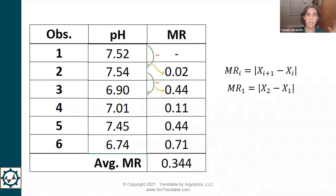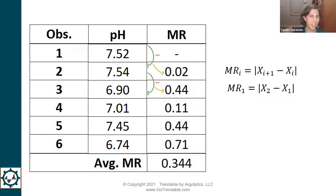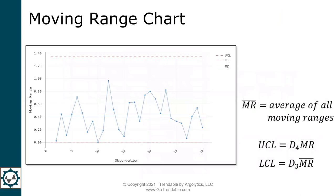For instance, if the first observation plotted on the I-chart was 7.52 and the second was 7.54, the absolute difference is 0.02 — and that 0.02 is what gets plotted on the moving range chart. Because of this, you'll always have one fewer point on the moving range chart than on the I-chart: 30 points on the I-chart means 29 on the moving range.